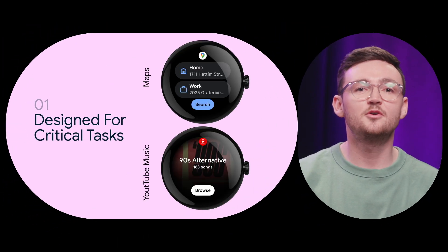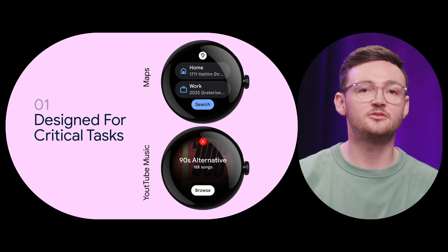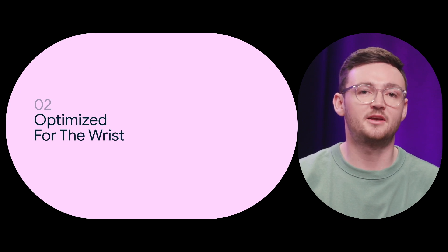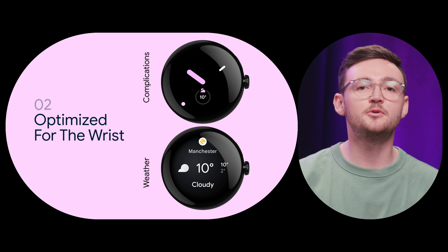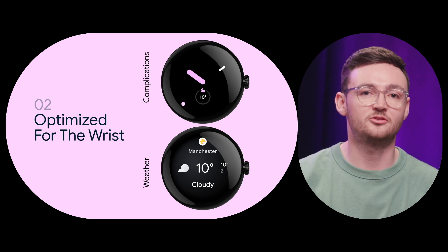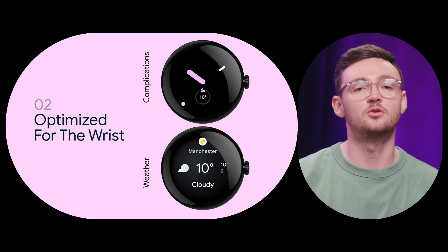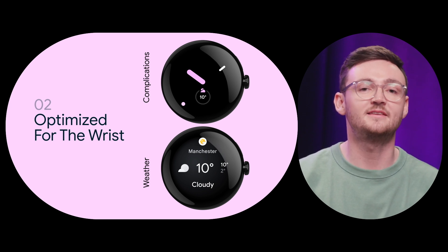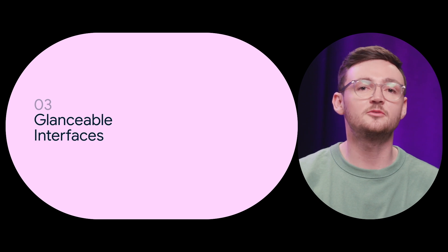Before we wrap up, let's recap on our core design principles for Wear OS. Our first principle is design for critical tasks. Focus on one or two critical user needs rather than a full phone app experience. Next, optimize for the wrist. We want to help people complete tasks on the watch within seconds to avoid ergonomic discomfort or arm fatigue. These quick and frequent interactions help users get back to being present in their daily lives.